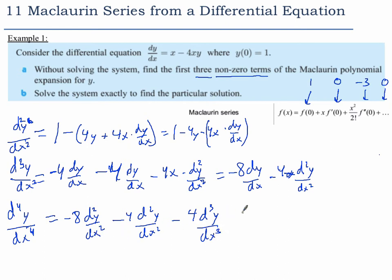Minus 4 times the third derivative. Okay, so the second derivative equals negative 3. So we're going to have negative 8 times negative 3 minus 4 times negative 3.